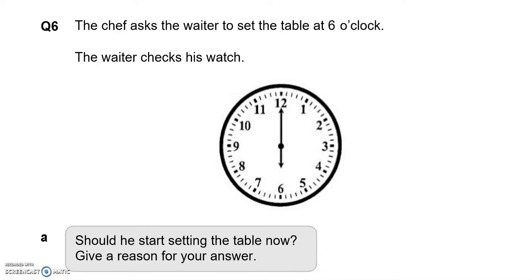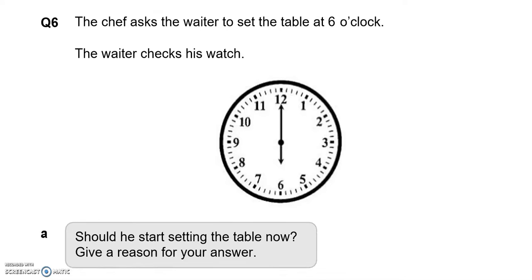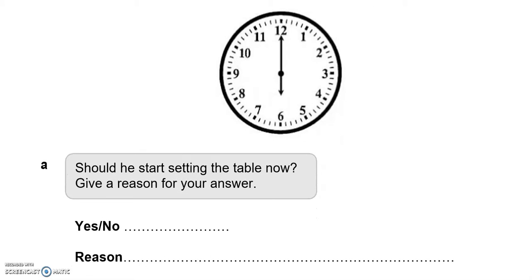The chef asked the waiter to set the table at six o'clock. The waiter checks his watch, which shows six o'clock. Should he start setting the table now? Yes — the reason is it is six o'clock now as shown by the watch.